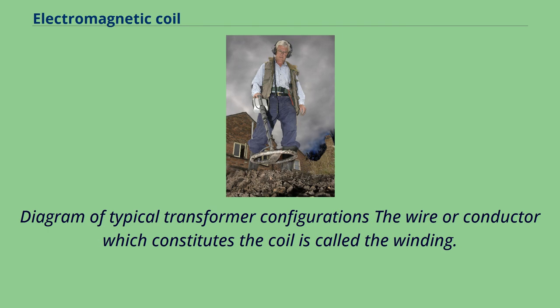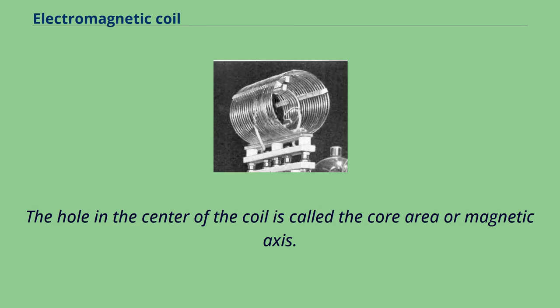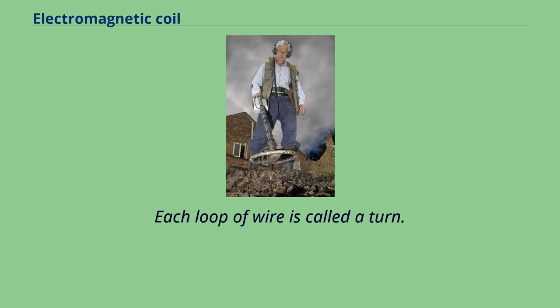Diagram of typical transformer configurations. The wire or conductor which constitutes the coil is called the winding. The hole in the center of the coil is called the core area or magnetic axis. Each loop of wire is called a turn.